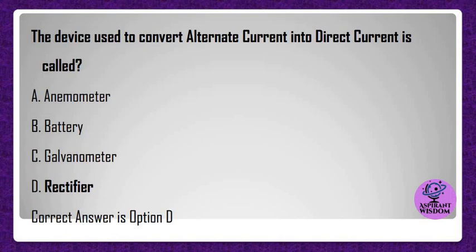The device used to convert alternating current into direct current is called? A) Anemometer, B) Battery, C) Galvanometer, D) Rectifier. Correct answer is option D.